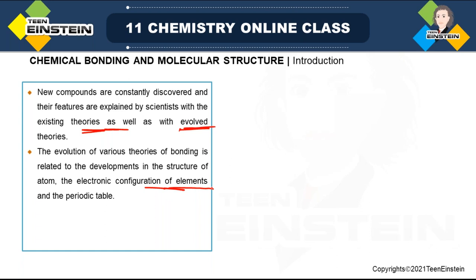The new compounds that are formed — what type of bonds are present, what is the feature of the bond, what is the nature of the bond, whether it can be easily broken or not — all these factors can be explained by scientists with existing theories. With time, there is evolution of theory, and when a new theory is discovered, obviously the old theory will be discarded. The evolution of various theories of bonding is related to the development in the structure of the atom, the electronic configuration of elements, and also the periodic table.